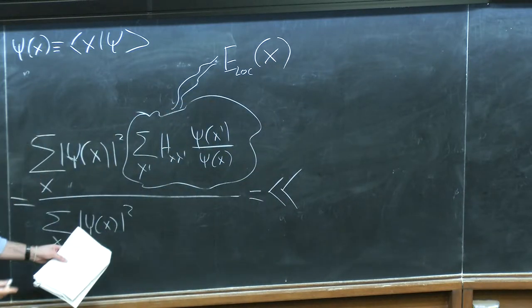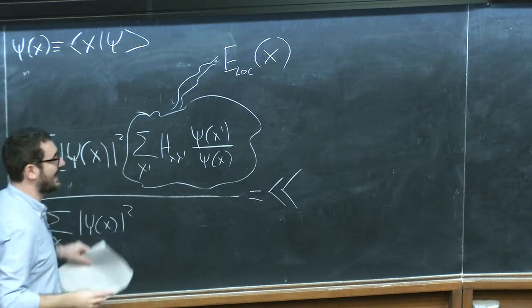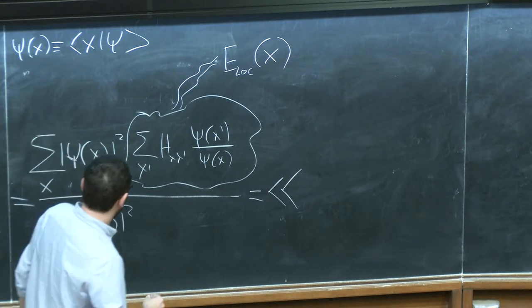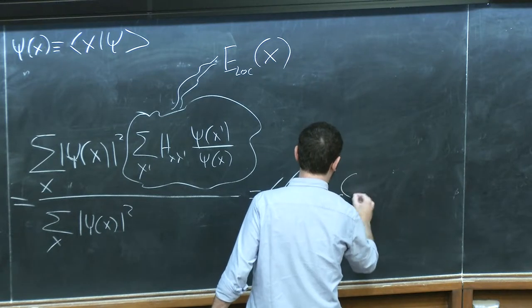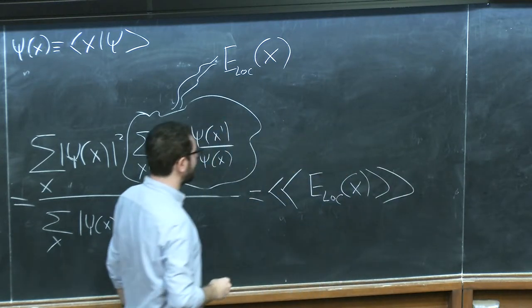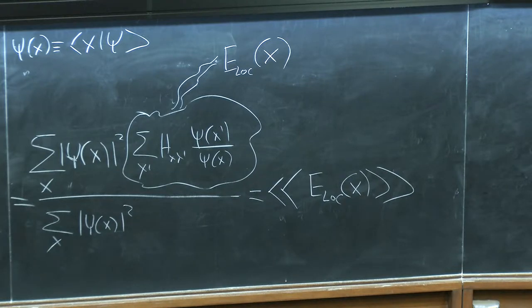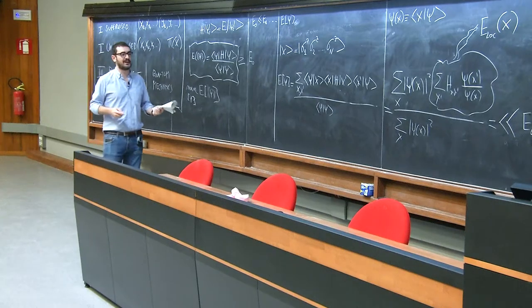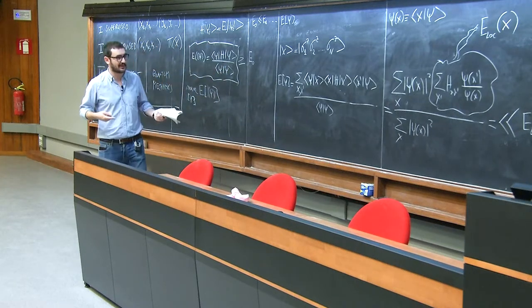There's nothing local in the quantum information sense — the Hamiltonian can be highly nonlocal — but it is called the local energy by convention. This is important: even for a generic correlated state, I can just do a Monte Carlo sampling, as discussed yesterday in the context of unsupervised learning, and estimate this expectation value stochastically.